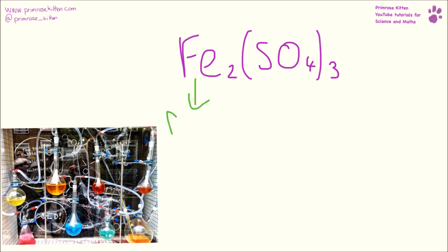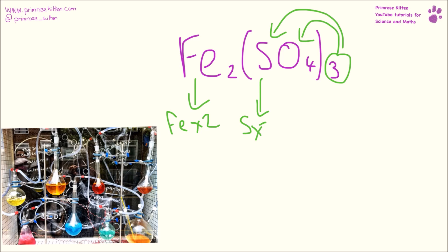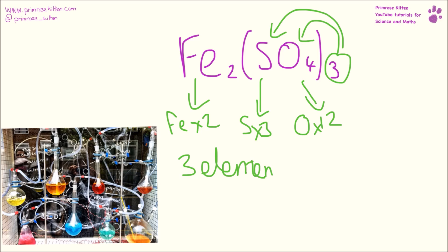Last one here — iron times two, three times everything inside. So that is sulfur times three, and oxygen is twelve again. So we have three elements and we have seventeen atoms: two plus three plus twelve.